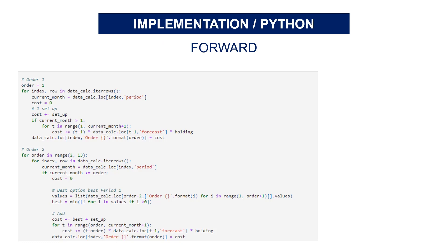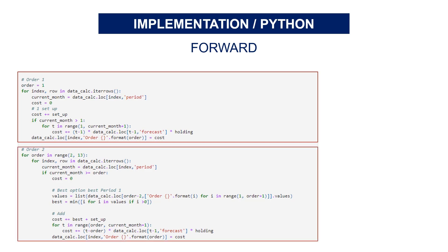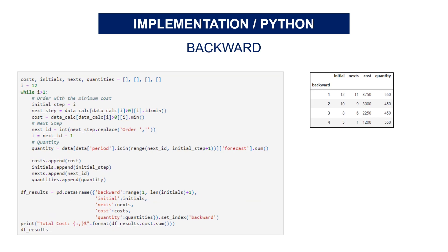Regarding the implementation, you will find the detailed source code in my GitLab repository — I will add the link in the description. The code uses Pandas DataFrames with row and column manipulation in a for loop. For the forward pass, it starts by computing the calculation for period 1 and then loops until the last period. For the backward pass, you compute the backward propagation the same way using Pandas manipulation. The final result is a table showing you the sequence of production periods with the last month carryover.